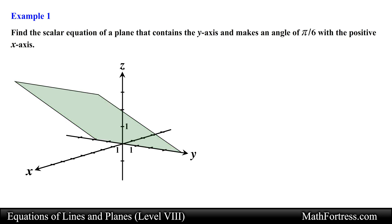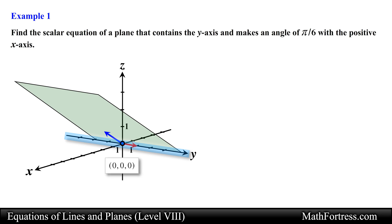To determine a point on the plane we can choose any point along the y axis since the plane contains this line. To find a normal vector we need to define two nonparallel vectors on the plane and cross them. In order to define these two vectors we need three non-collinear points. We can use two points that are on the y axis — the point at the origin as the first point and a second point along the y axis. We can choose any two points on the y axis, but these two points are really convenient.